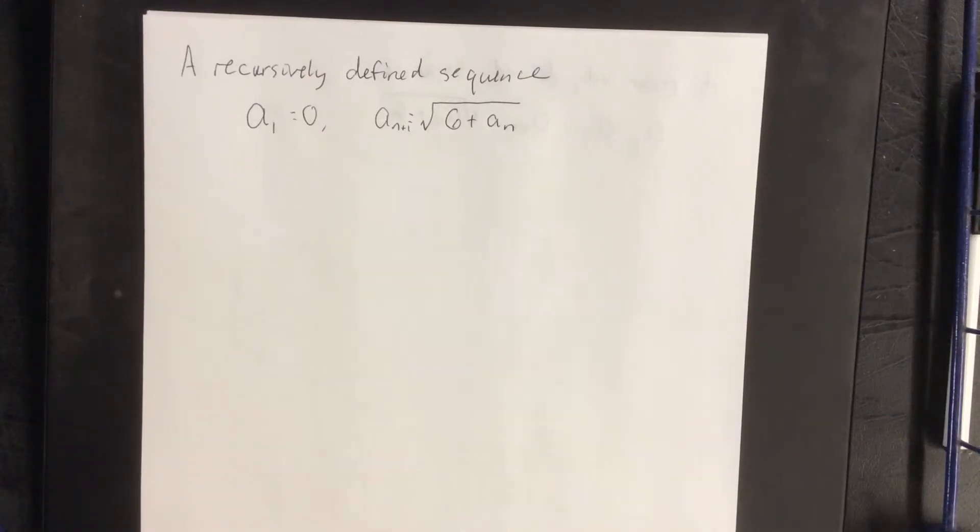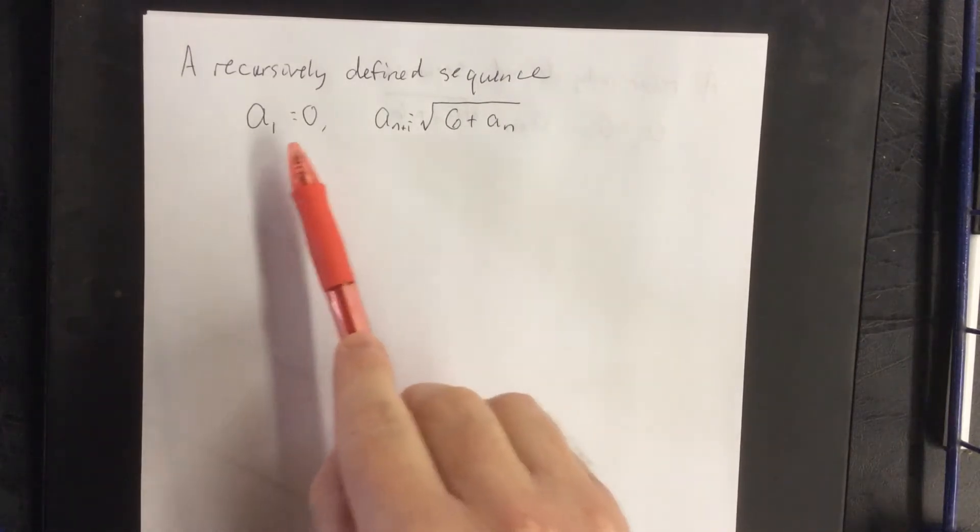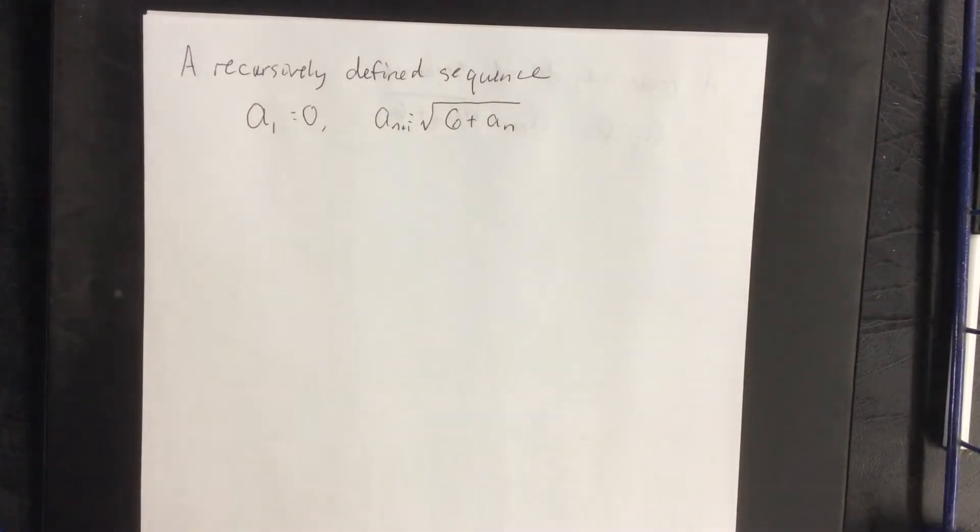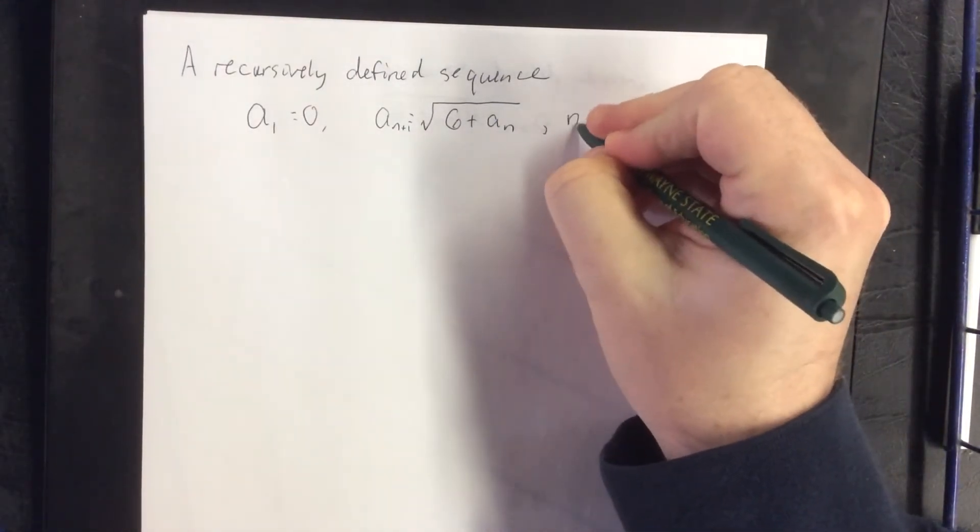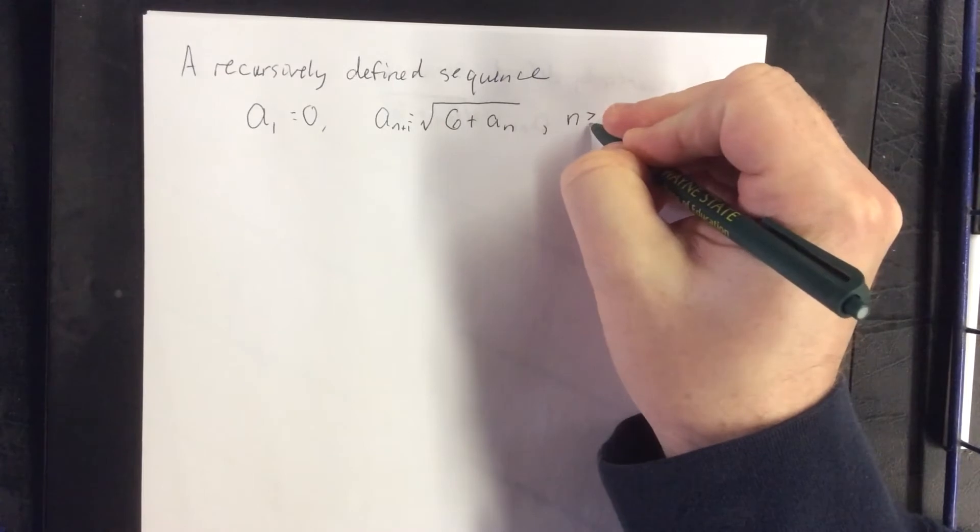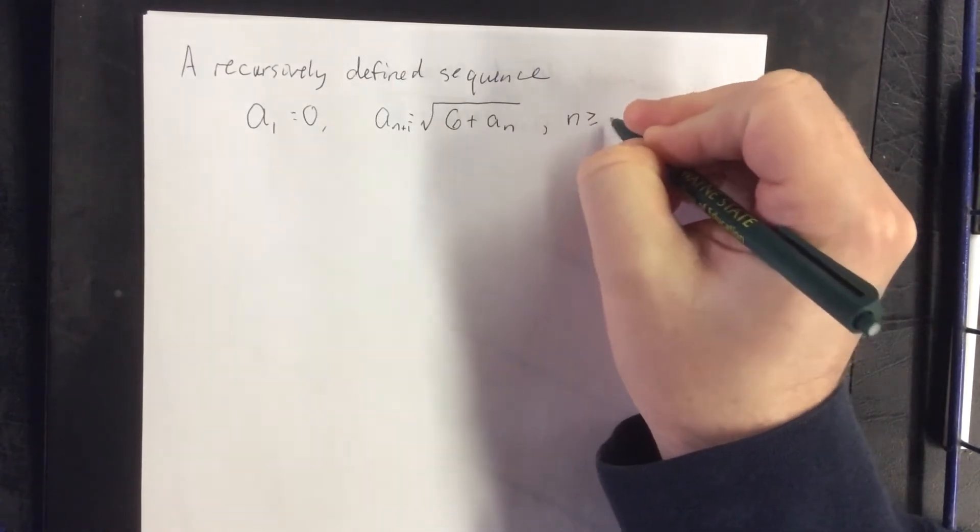In this example, we're going to analyze a recursively defined sequence. For our recursively defined sequence, we're going to say that the first term of the sequence will be 0, and every term after that is going to be the square root of 6 plus the previous term. This will be for all n is greater than or equal to 1.